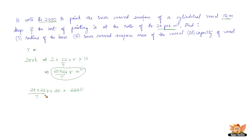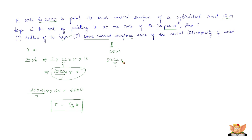Solving 20 × (440r/7) = 2200, we get r = 7/4 meters. So the radius of the base is 7/4 m. The inner curved surface area is 2πrh = 2 × 22/7 × 7/4 × 10. The 7s cancel, and we get 22 × 5 = 110 m². So the inner curved surface area of the vessel is 110 m².